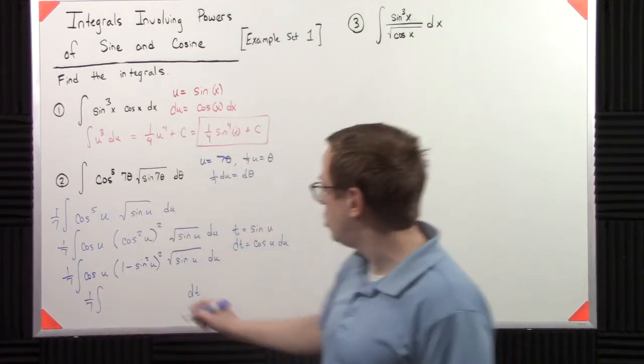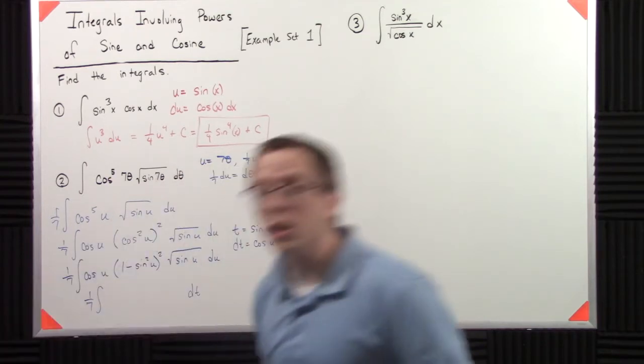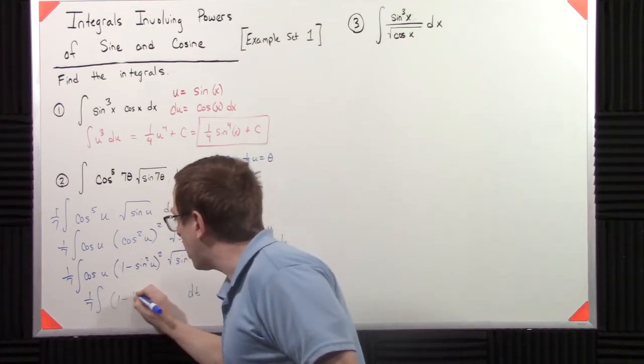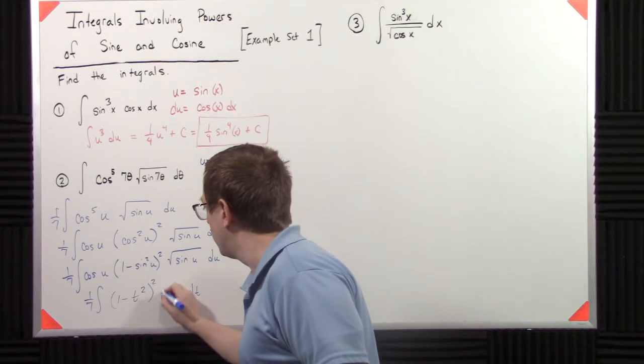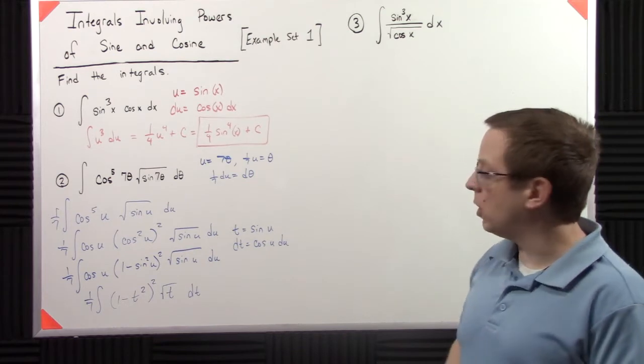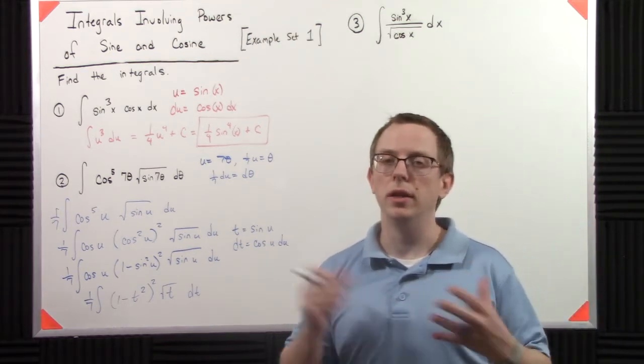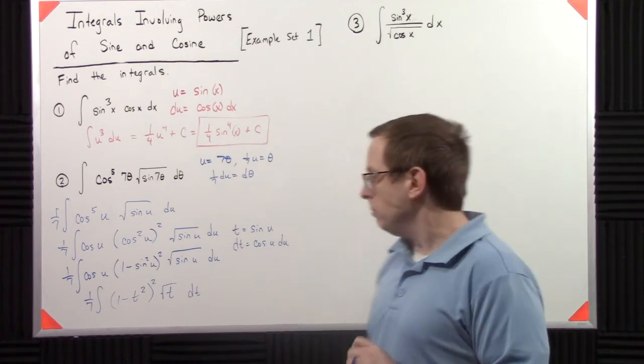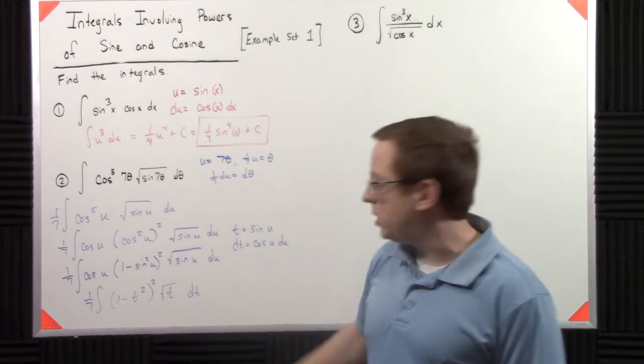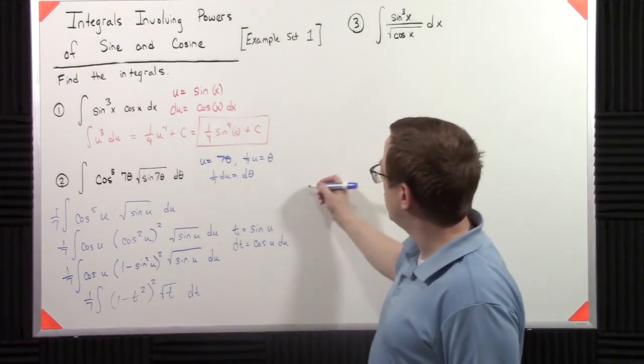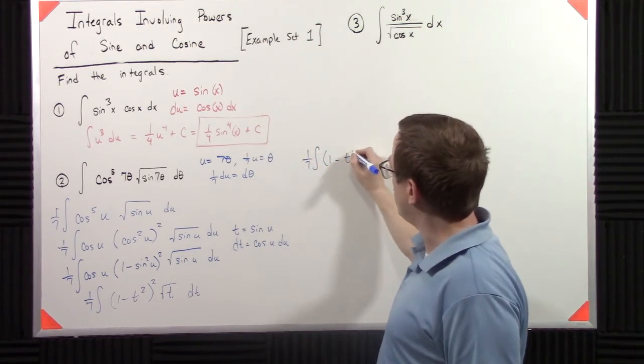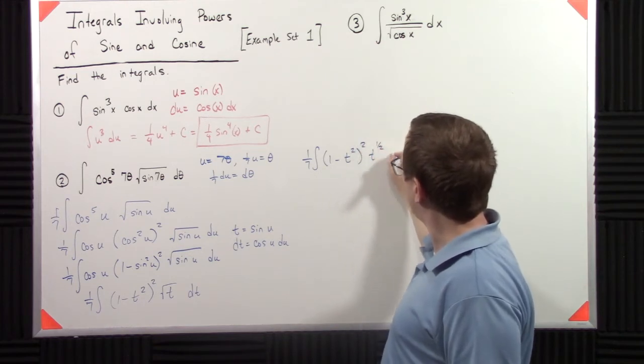The one-seventh is unchanged. So one, I've signed squared here. So that's going to be now one minus t squared squared square root of t dt. Okay, so yikes, we're still kind of still trying to figure this thing out. But now we have everything in terms of polynomials. So instead of t to the square root of t, I'm going to write that as t to the one-half. So I'm going to say that's one-seventh one minus t squared squared t to the one-half dt.